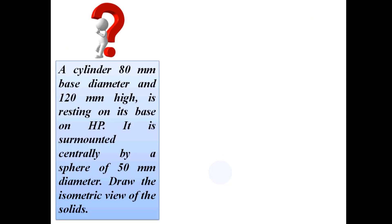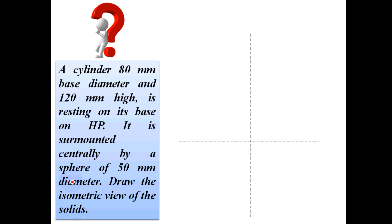Next problem: a cylinder 80mm base diameter and 120mm high is resting on its base on HP. It is surmounted centrally by a sphere of 50mm diameter. Draw the isometric view of the solid. The cylinder is 80mm diameter and 120mm high, resting in simple position, with a sphere of 50mm diameter — radius 25mm — placed centrally on top.